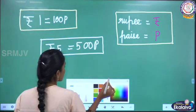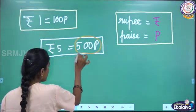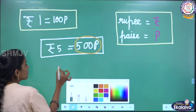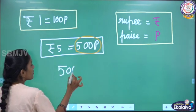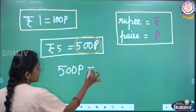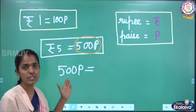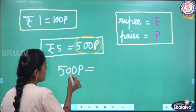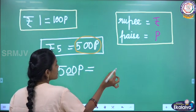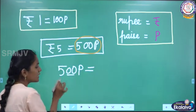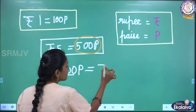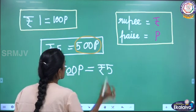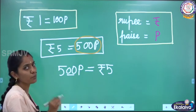Now, to convert peise to rupees — 500 peise. To convert 500 peise to rupees, just we have to remove 2 zeros on the right. I have to remove these 2 zeros on the right. If I remove 2 zeros on the right, I will get number 5. So we have to write first the symbol of rupees and then this 5. So 500 peise equal to rupees 5.